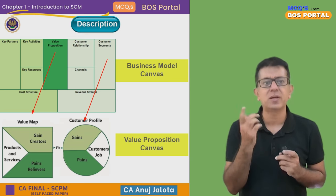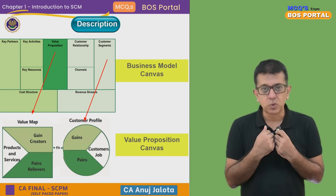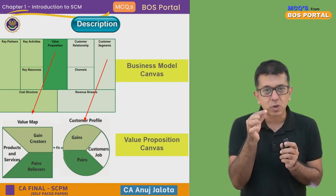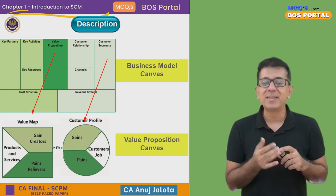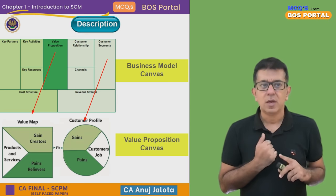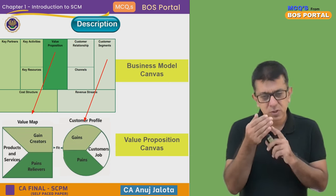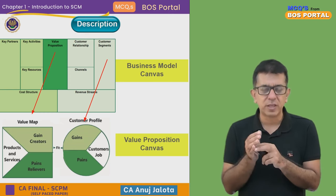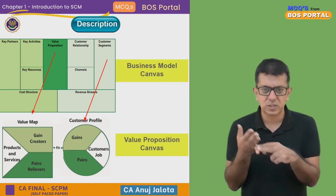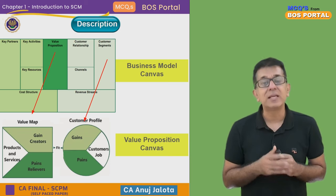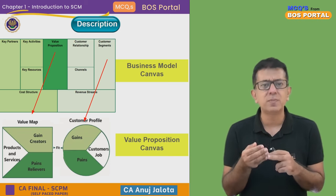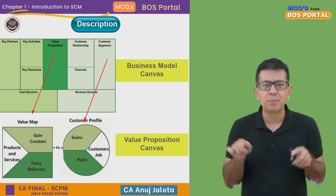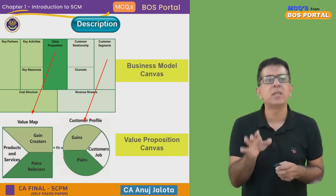So a company like Byju's tries to solve this problem of the consumer through their products and services. They make products that solve the needs of the consumers and relieve them of the pain, so parents don't have to worry about their kids' studies. Apart from that, as gain creators, parents get certain benefits — like being able to interact with teachers to know about their child's progress, and getting an app where results come through, and so forth.